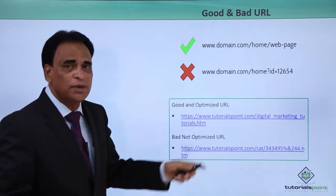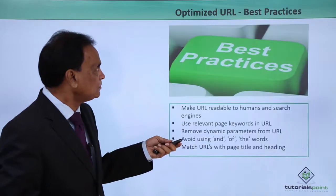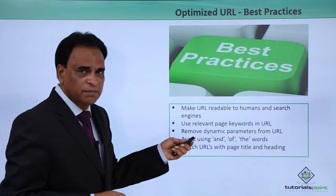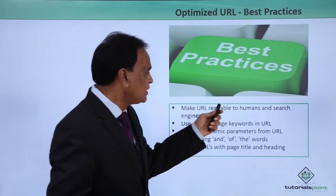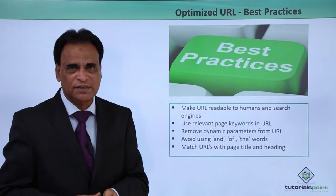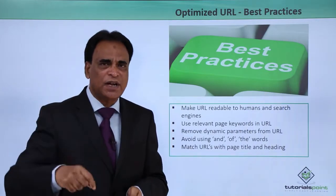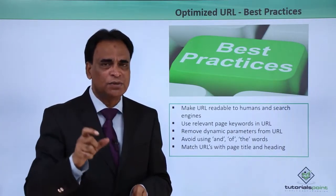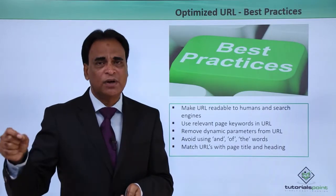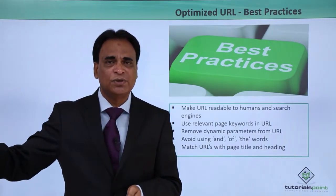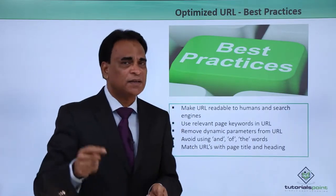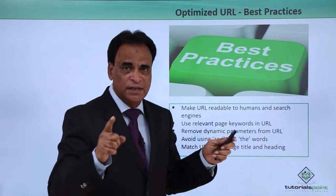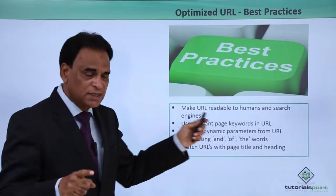These are some examples of good and bad URLs. What are the best practices you can implement for URL optimization? Make URLs readable to humans and search engines. For example, website.com slash digital-marketing-training dot html is a good URL. Whereas website-name dot com slash digital-marketing slash category slash 1, 2, 3, 4 with a dollar sign and question mark does not make any sense. Make sure the URL is readable to humans and search engines.